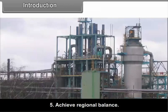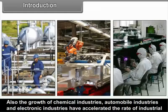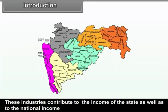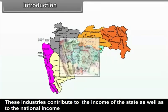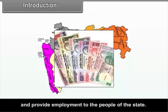To achieve regional balance, in Maharashtra there is a development of sugar and cotton textile industries which are based on the traditional agricultural produce. Also, the growth of chemical industries, automobile industries and electronic industries have accelerated the rate of industrial development. These industries contribute to the income of the state as well as to the national income and provide employment to the people of the state.